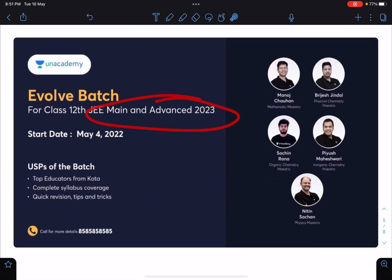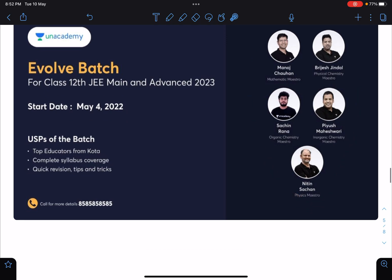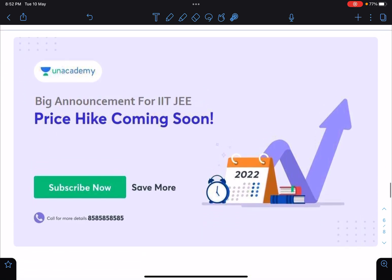And this batch, Evolve batch for JEE Mains and Advanced 2023, has just started. There was the fourth class, technically third class, one was orientation. So we will be completely covering entire eleventh and twelfth class syllabus in this batch by November end. You can join me in these classes and this is one of the best panel of Unacademy who is going to handle this batch.